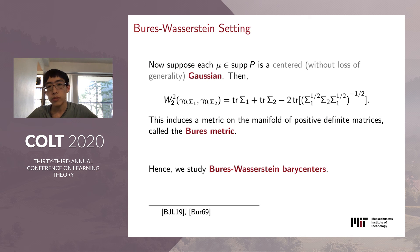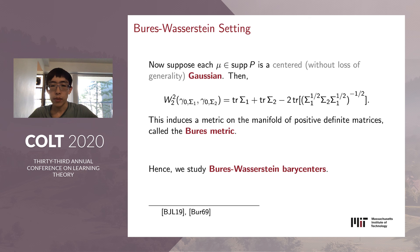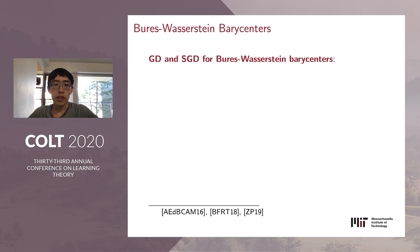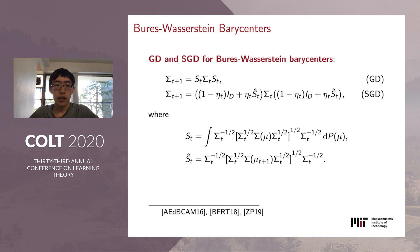Therefore, we focus on obtaining concrete consequences in a special case: when all distributions in the support of p are centered Gaussians. In this case, we can identify a Gaussian with its covariance matrix, and the problem can be phrased as a purely matrix problem. The more general perspective of Wasserstein space turns out to be more enlightening and instrumental to our results. This matrix manifold with a certain Riemannian metric is called the Bures metric, after Bures who introduced it in quantum information theory—hence we call this the setting of Bures-Wasserstein baricenters. We can concretely write down the update equations for gradient descent and stochastic gradient descent, which consist only of matrix multiplications and are trivial to implement in practice.